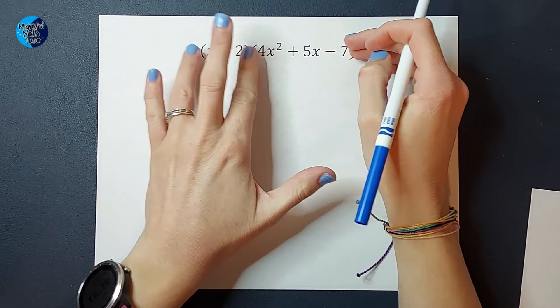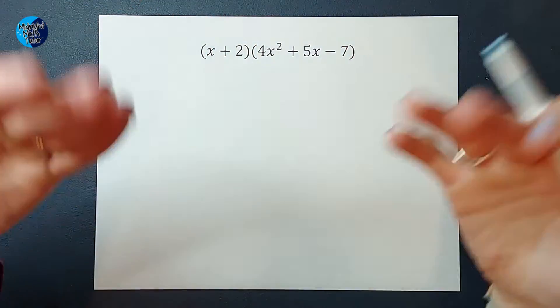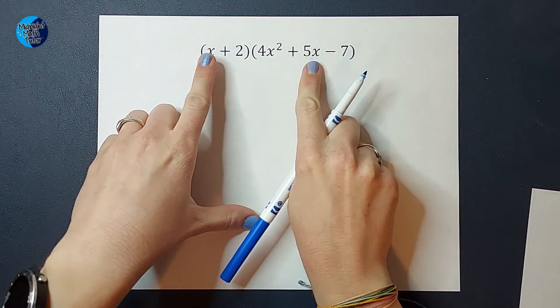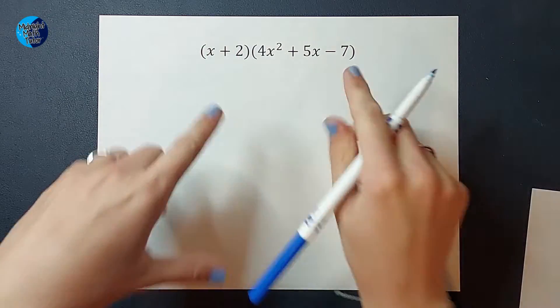Pretend for a second these parentheses weren't here. We weren't multiplying. When you're adding or subtracting these, you have to find like terms, right? I would only be able to add the x's, the ones without x's.